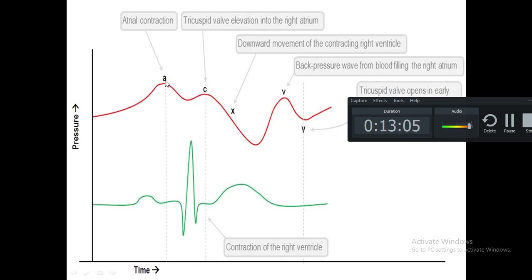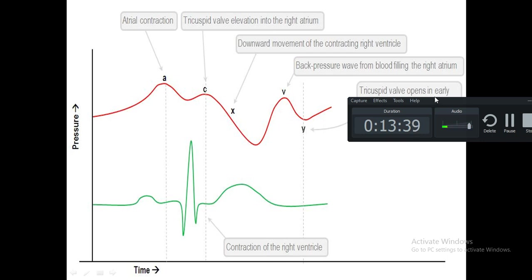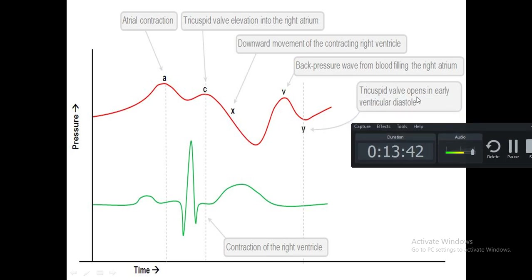On the venous pulse tracing you can see the A wave from atrial contraction, then C from tricuspid valve elevation into the right atrium, followed by the X descent downward wave, then the V wave representing back pressure from blood filling the right atrium, and finally the Y wave due to tricuspid valve opening in the early stage of ventricular diastole.